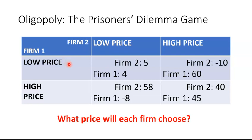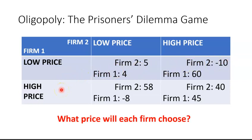The prisoner's dilemma story is symmetric — the numbers don't have to be exactly symmetric, but the reasoning is. From the point of view of firm two: if firm one chooses the low price, it's better for firm two to choose the low price and get five, rather than choose the high price and lose ten. If firm one chooses the high price, it's better for firm two to choose the low price, because 58 is bigger than 40. So firm two concludes: no matter what firm one does, it's better to choose the low price strategy.